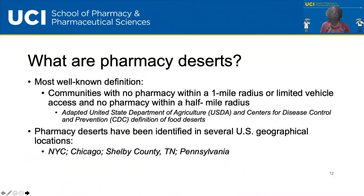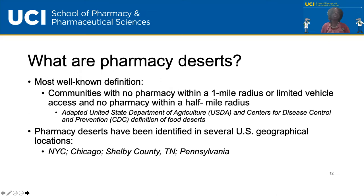We'll be discussing the social determinants of pharmacy deserts. Pharmacy deserts are defined as communities with no pharmacy within a one-mile radius, or communities with limited vehicle access and no pharmacy within a half-mile radius. This definition was adopted from the USDA and CDC definitions of food deserts. While pharmacy deserts are not a new concept, our study was the first to identify and characterize pharmacy deserts in California, more specifically in LA County.